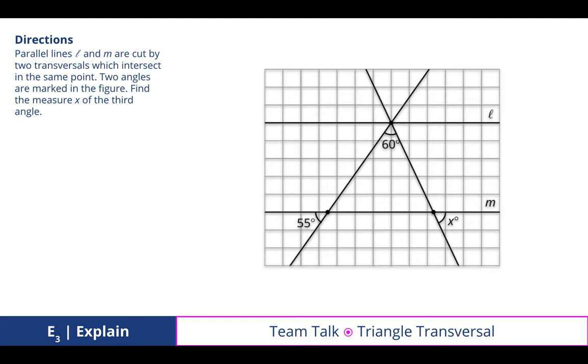Take a moment to talk with your team members. We did this during our class. Parallel lines L and M are cut by two transversals, which intersect at the same point. Two angles are marked in the figure. Find the measure of angle X of the third angle. Well, the third angle, I guess, because this is one of them, this is a second one, and this is the third one.